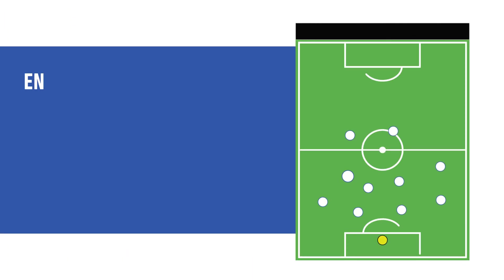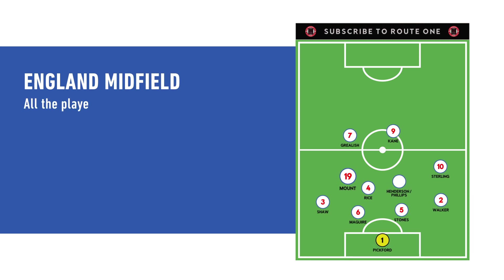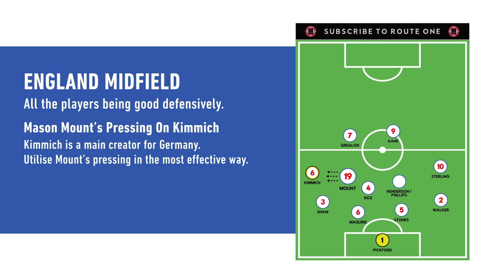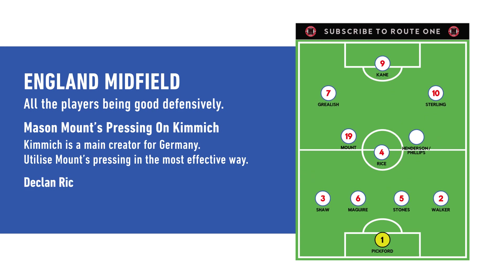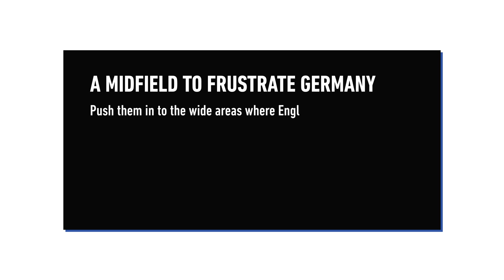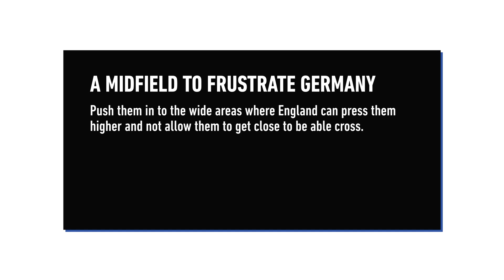This midfield gives you a range of qualities, attempting to replicate what France had, with all the players being good defensively. What is really important and can be very effective is Mason Mount's pressing on the left over to Joshua Kimmich — singled out as one of the main creators for Germany. With Rice in the middle — who can drop between the centre-backs to congest the box — and then either Jordan Henderson or Kalvin Phillips, this creates a good midfield which can frustrate Germany and push them into wide areas, where England can press them and not allow Kimmich and Gosens to get to the byline to cross into the box.